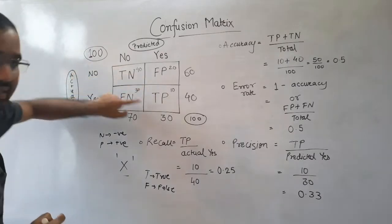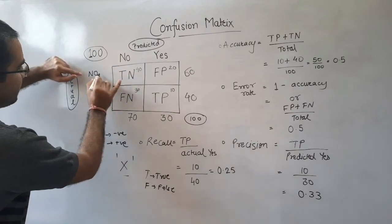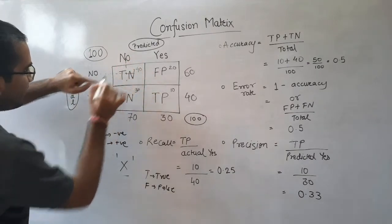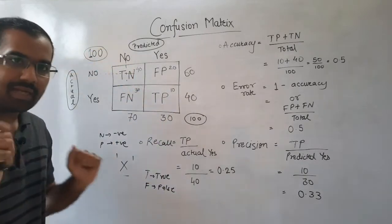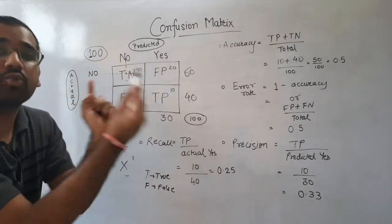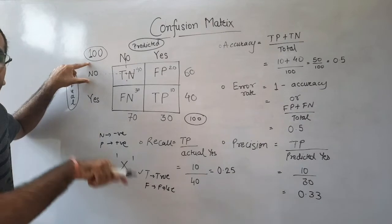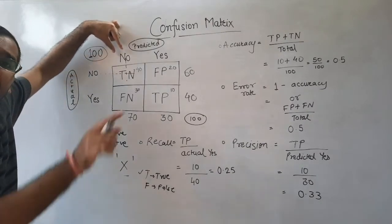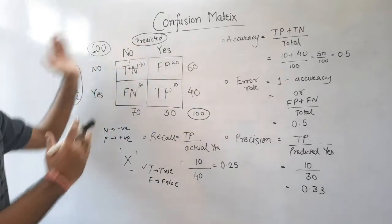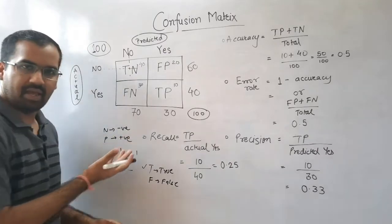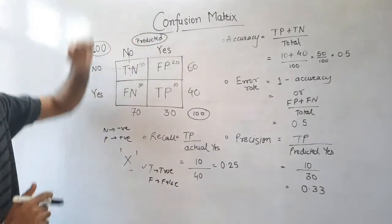Let's consider the first cell. From the column header there is 'actual no' and from the row header there is 'predicted no' — they intersect at this cell. When these two things match, we say it is true, because in reality the patient does not have disease X and the doctor predicted the same. Since both say no, it's a perfect match — true. And N for negative because the patient tested negative for disease X. Hence this cell is TN — True Negative.